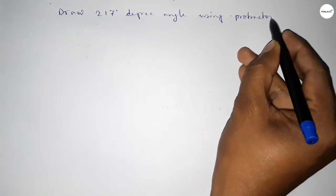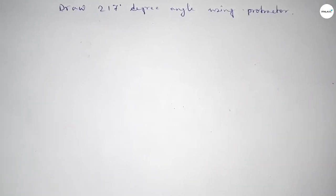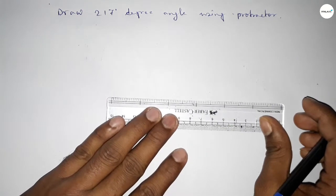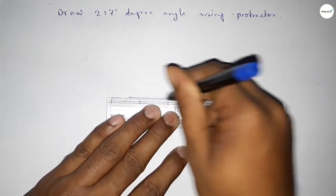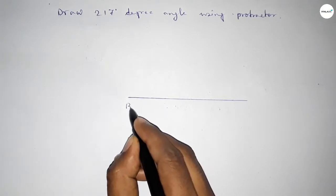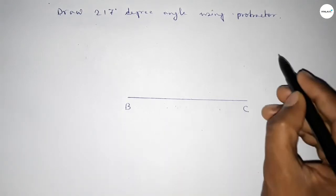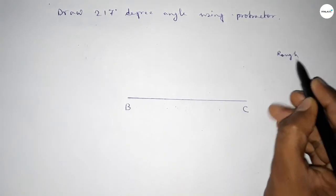So let's start the video. First of all, we have to draw here a straight line of any length. So first drawing here a line and taking here point B and here C. Now roughly discussing some calculation here.